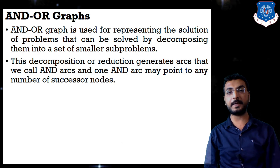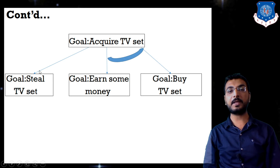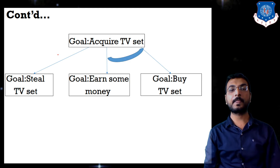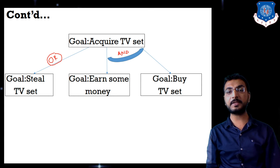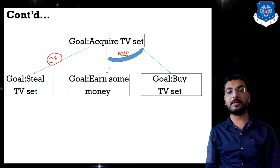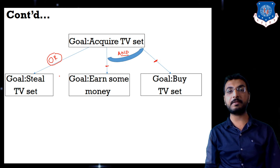Here is an example of an AND-OR graph. Our goal is to acquire a TV set. One option is to steal the TV set — this is connected by an OR edge. The second alternative is to earn some money AND buy a TV set — these two nodes are connected by an AND edge, meaning both activities must be performed.